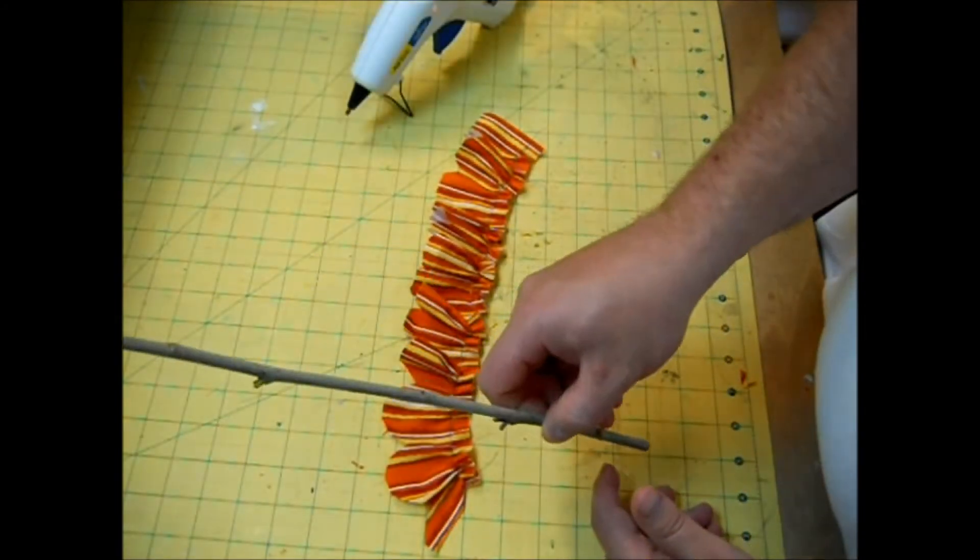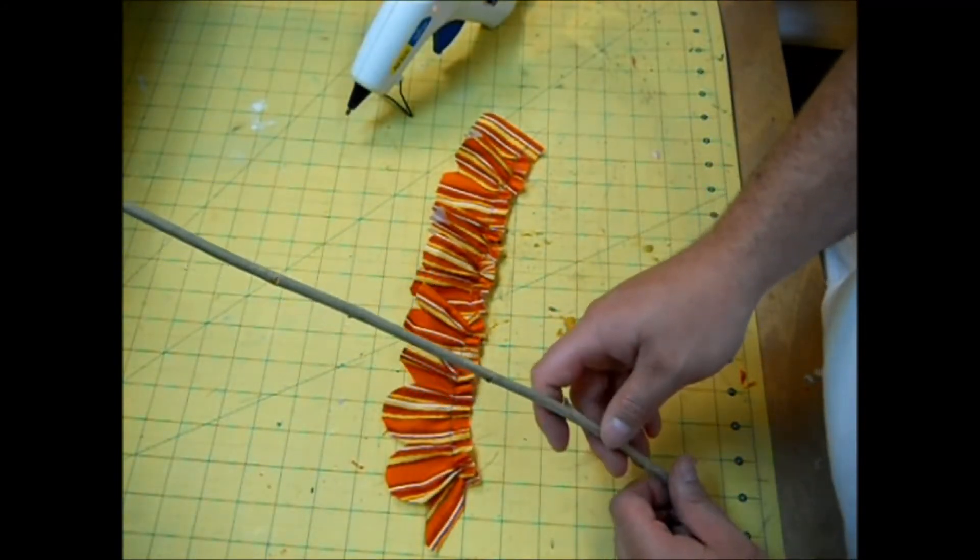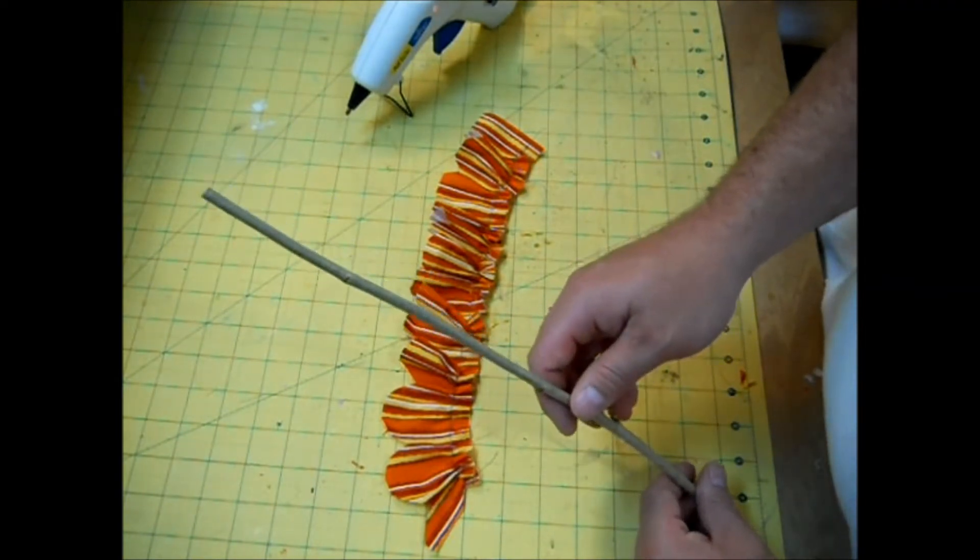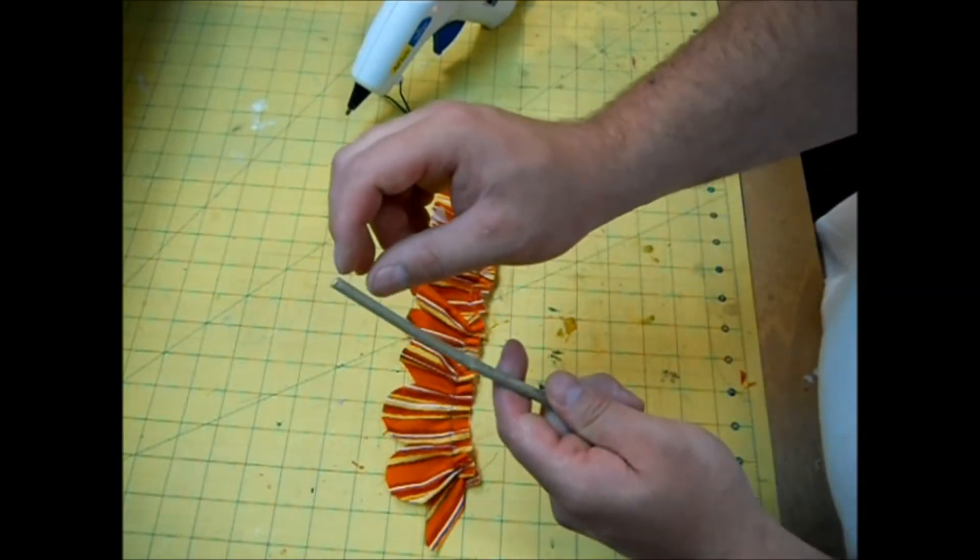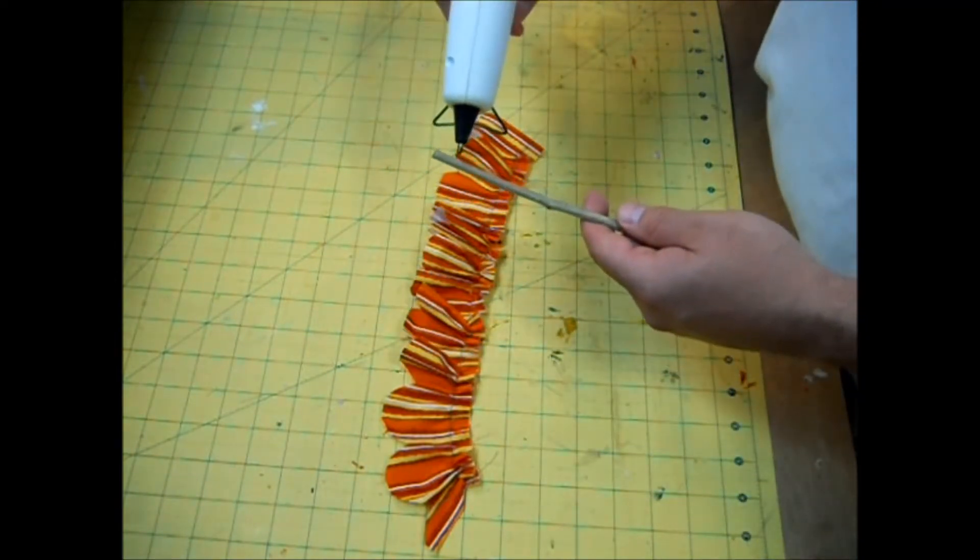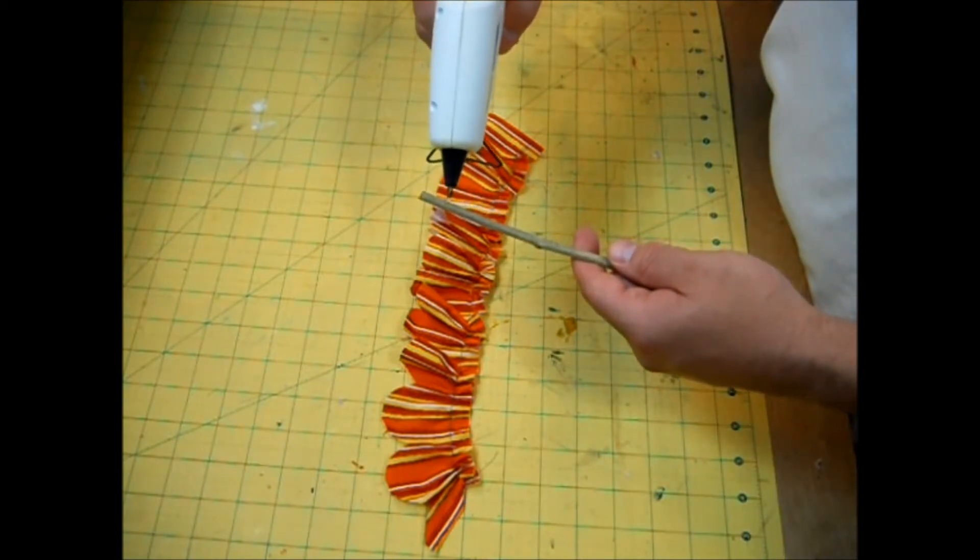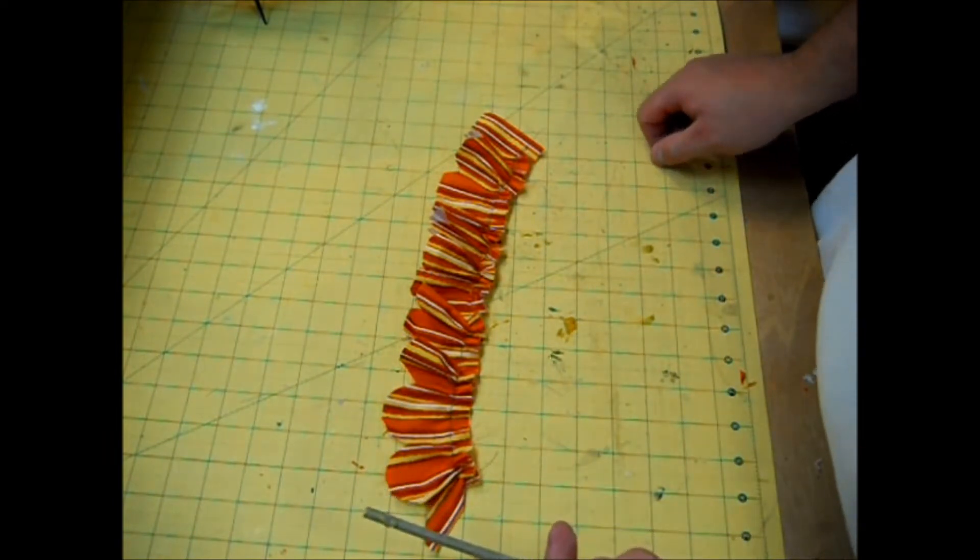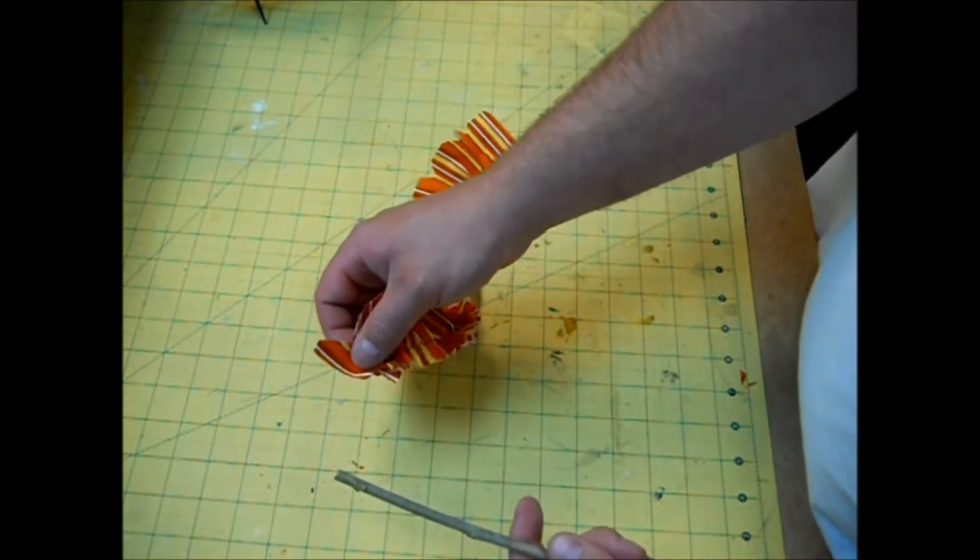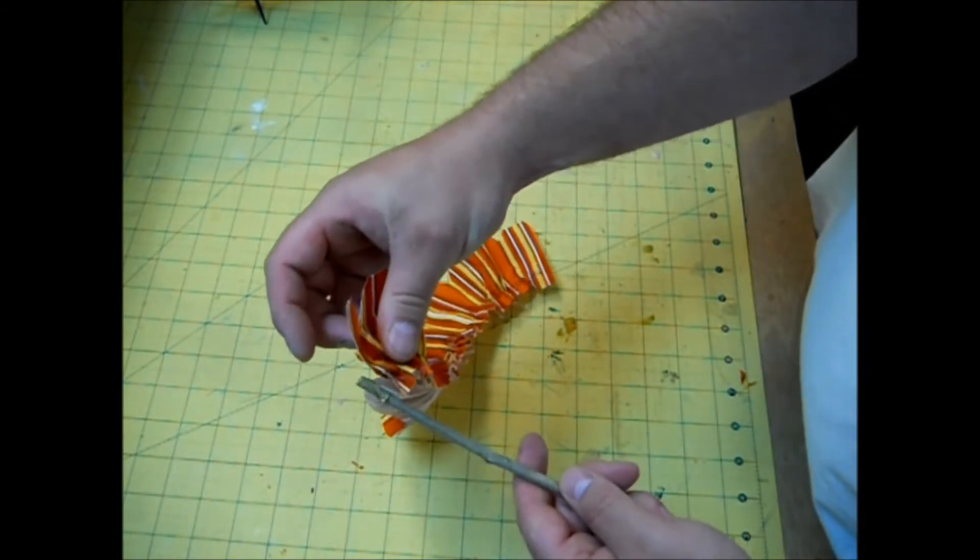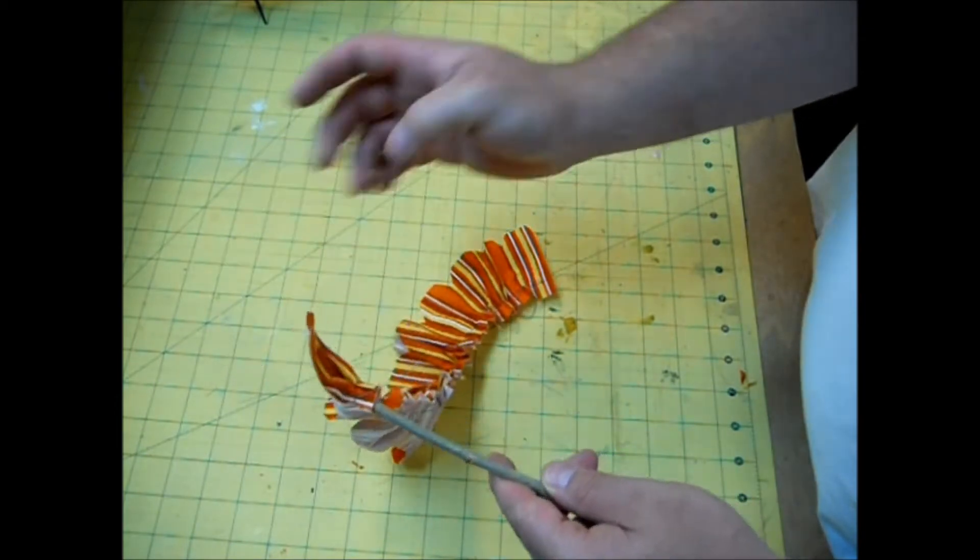Now, like I said, you don't have to use sticks. I just kind of like the rustic look of these. You could use chopsticks, drinking straws, or even a wooden dowel. So the next step is I'm going to put about a half inch line of glue right on the stick here. Just like that. When you cut these, you'll have one half of a petal, usually. So I like to start with that petal first, and I'm going to glue it right onto my stick.